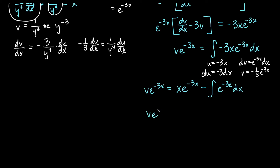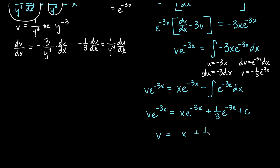Computing that remaining integral, the antiderivative of e to the negative 3x is negative one-third e to the negative 3x, but with a negative sign already present we get plus one-third e to the negative 3x, plus a constant. So v times e to the negative 3x equals x e to the negative 3x plus one-third e to the negative 3x plus c. Dividing by e to the negative 3x throughout: v equals x plus one-third plus c e to the positive 3x.